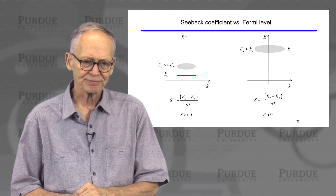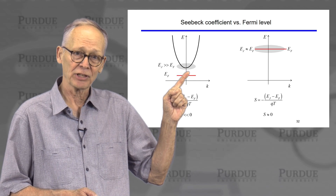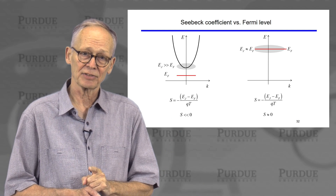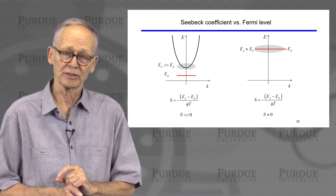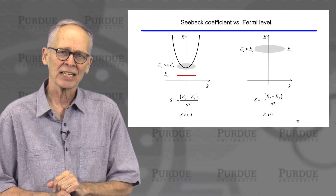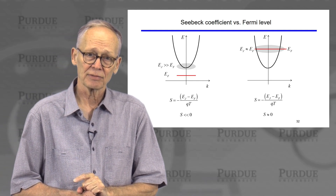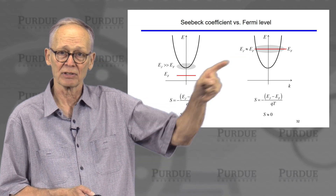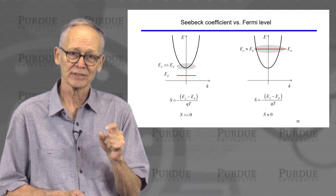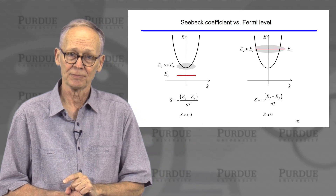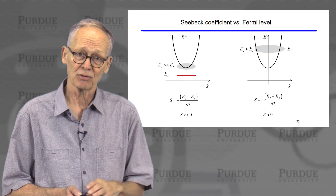In a non-degenerate semiconductor where the conduction band is above and the Fermi level is way below the bottom of the conduction band, the current flows near the bottom of the conduction band, so the Seebeck coefficient is going to be a large negative number — the magnitude is very large. In contrast, in a very heavily doped semiconductor where the Fermi level is deep inside the band, the current flows at the Fermi window right where there are lots of states, very close to the Fermi level. There is little difference between the average energy at which current flows and the Fermi level, so the Seebeck coefficient is very small. In lightly doped semiconductors, the Seebeck coefficient can be quite large.